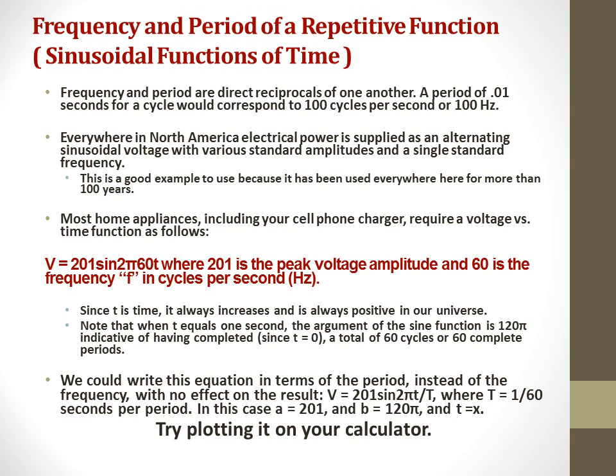Note that when T equals one second, the argument of the sine function is 120π, indicative of having completed, since T equals zero, a total of 60 cycles or 60 complete periods. We could write this equation in terms of the period instead of the frequency with no effect on the result.